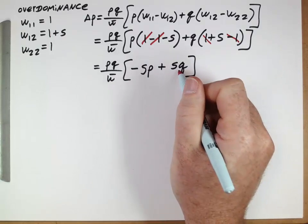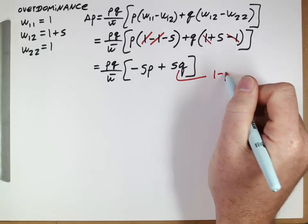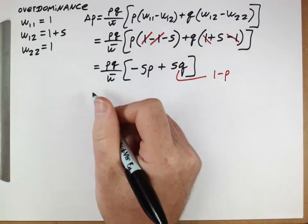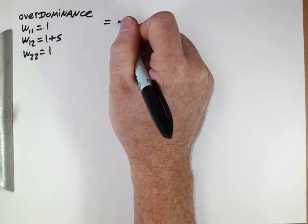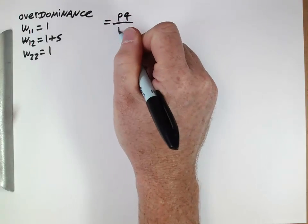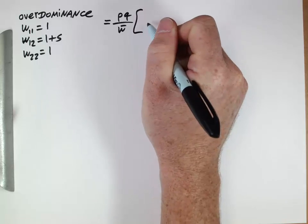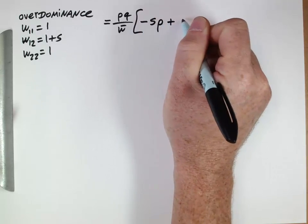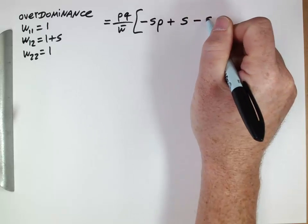Remember, Q is really just 1 minus P, kind of in disguise, so we can substitute that in there. So making that substitution gives us PQ over W bar, negative S times P plus S times 1 minus S times P.